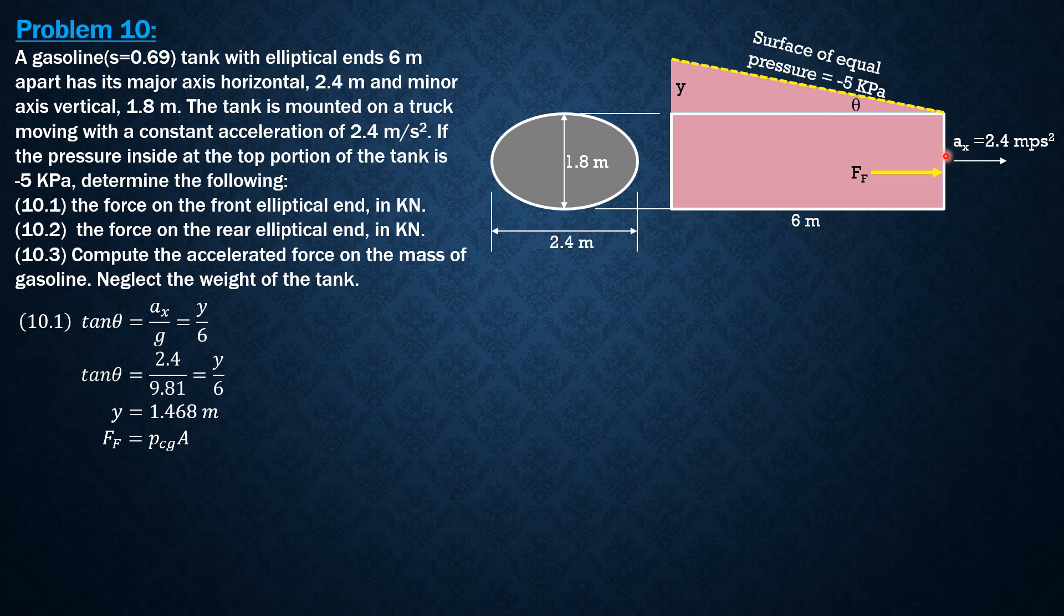So the pressure at the centroid of the front end is negative 5 plus specific weight of gasoline, which is 0.69 times 9.81 kilonewtons per cubic meter, which is specific weight of water, times the centroid is 0.9 below, and the area is phi 1.2 times 0.9. So F f equals negative 5 plus 0.69 times 9.81 times 0.9 in the area of the ellipse phi 1.2 times 0.9. So from here, we can solve F sub f, force on the front end, equal to 3.71 kilonewtons.